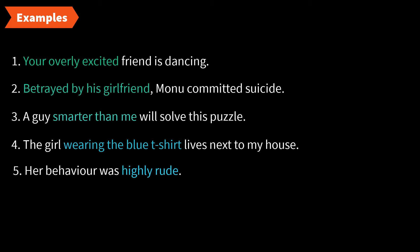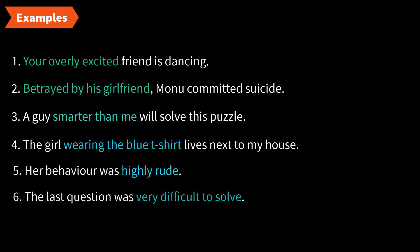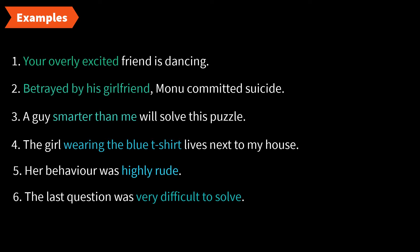Now let's take examples of adjective phrases coming at the end of the sentence. 'Her behavior was highly rude' — 'highly rude' is the adjective phrase at the end of the sentence, giving information about the noun 'behavior.' Another example: 'The last question was very difficult to solve' — 'very difficult to solve' is the adjective phrase at the end, modifying the noun 'question.' What kind of question? Very difficult to solve.